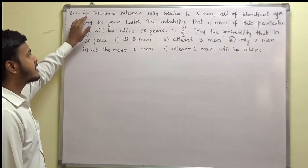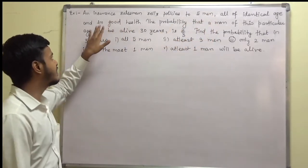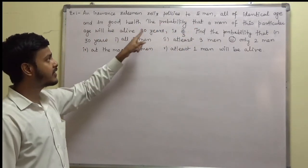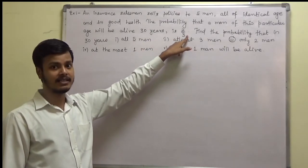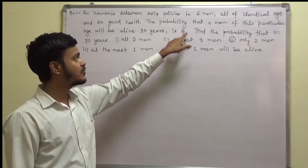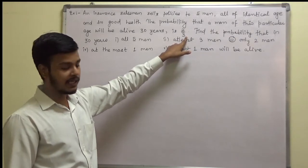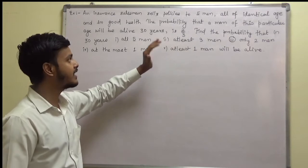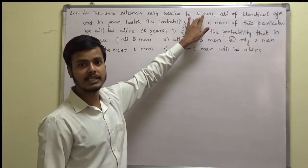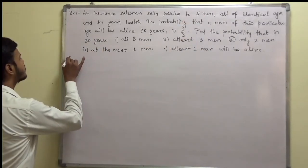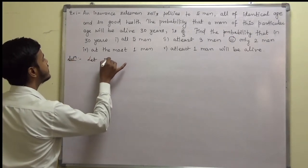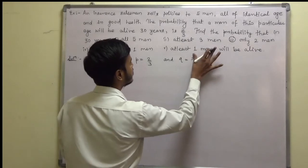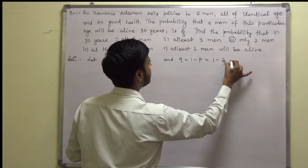This problem says: an insurance salesman sells policies to five men, all of identical age and in good health. The probability that a man of this particular age will be alive in 30 years is 2/3. So the probability of success p is 2/3, q equals 1 minus p equals 1/3, and n equals 5.